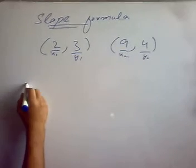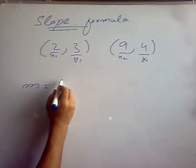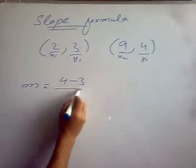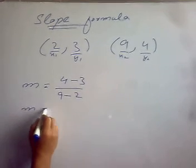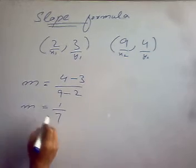And if we calculate m, that would be y2 minus y1 divided by x2 minus x1. So m will be 1 divided by 7.